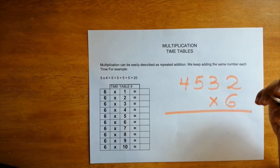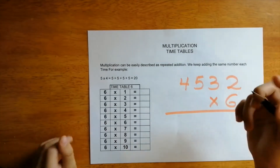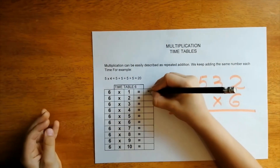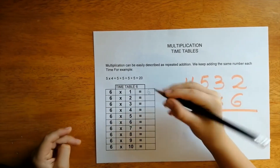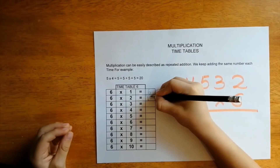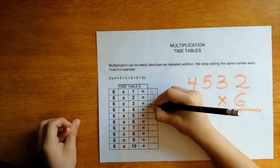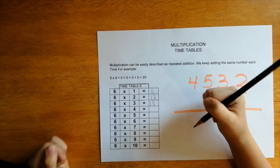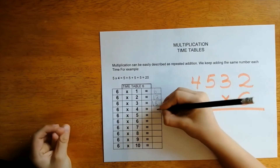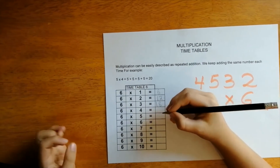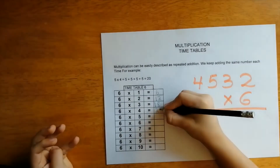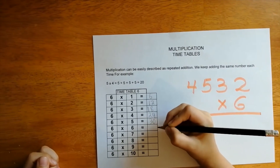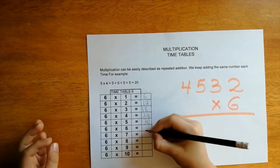Hi guys, it's me again! Now we're going to do times table 6. You just have to add and add and add — add 6 plus 6 plus 6 plus 6. 6 times 1 is 6. 6 plus 6 is 12. 6 plus 6 plus 6 is 18. 6 plus 6 plus 6 plus 6 is 24. And 6 times 5 is 30. And 6 times 6 is 36.